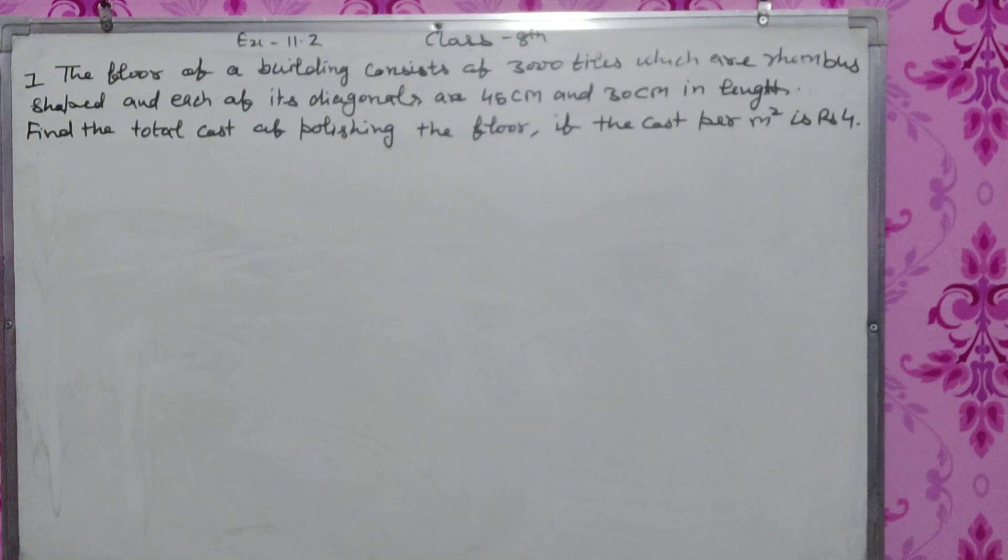I will solve a question from class 9.2. The floor of a building consists of 3000 tiles which are rhombus shaped and each of its diagonals are 45 cm and 30 cm in length. Find the total cost of polishing the floor if the cost per meter square is Rs. 4.